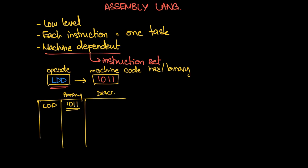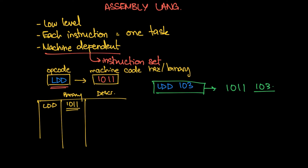Even though assembly language is a low-level programming language, it still needs to be translated to machine code. When you have an instruction like LDD 103 and you assemble the program to get it ready to be executed, it might turn into something like 1011 followed by the binary equivalent of 103.